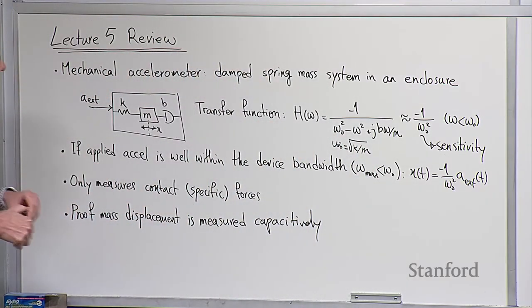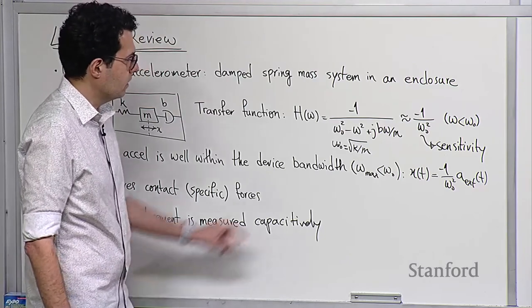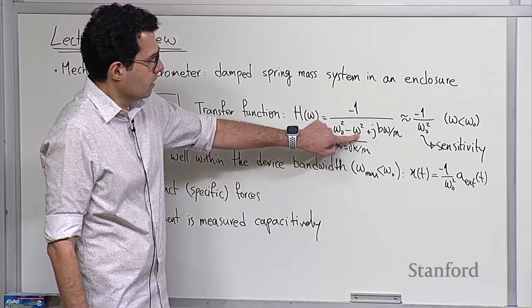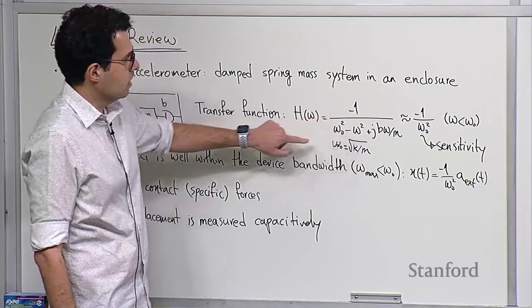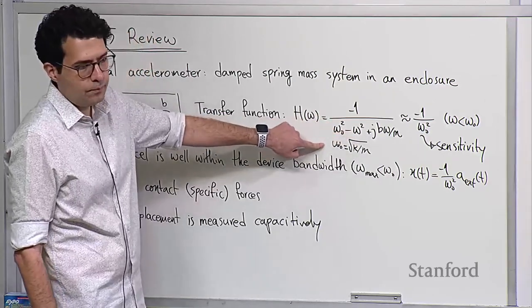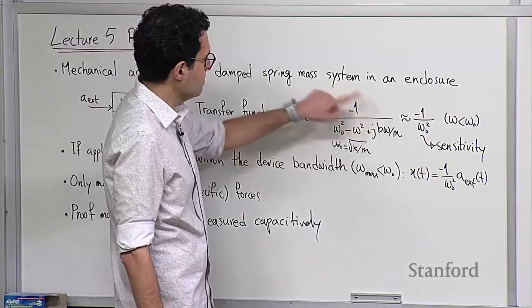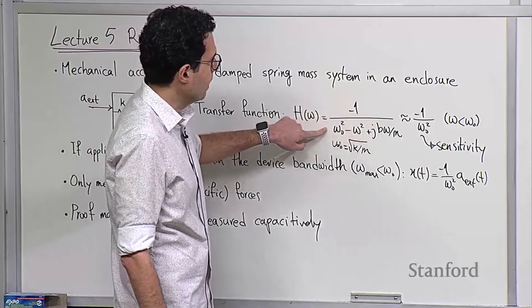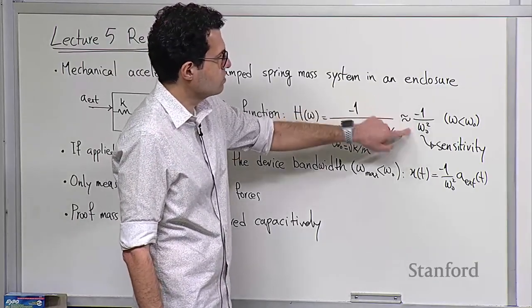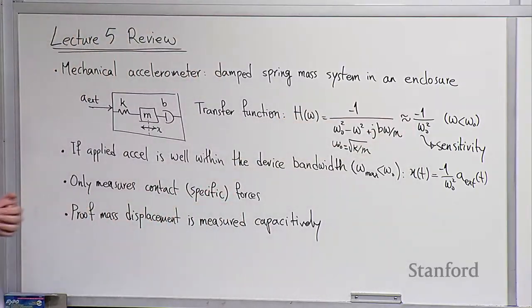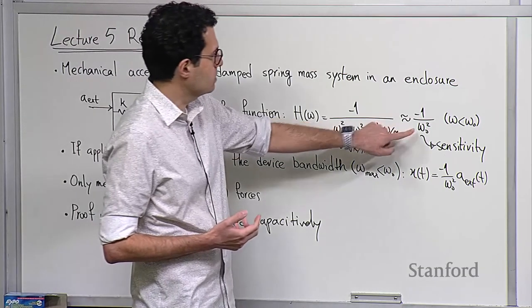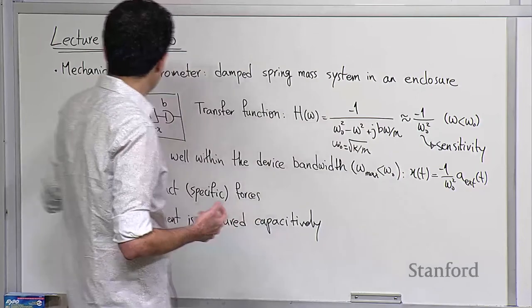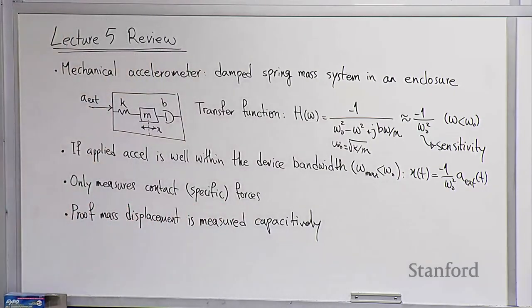In the case where the frequency content of your input omegas are less than omega zero, you can approximate this very well by just a constant, which is minus one over omega zero squared — which we call the sensitivity of the device. That's basically a scale factor you apply to A to get the displacement X.